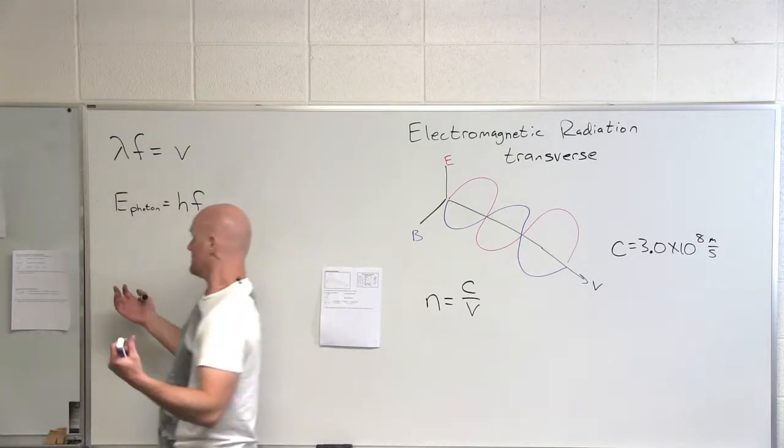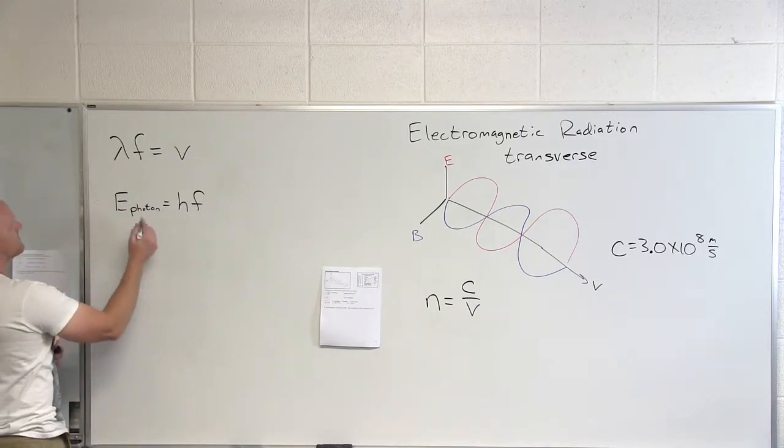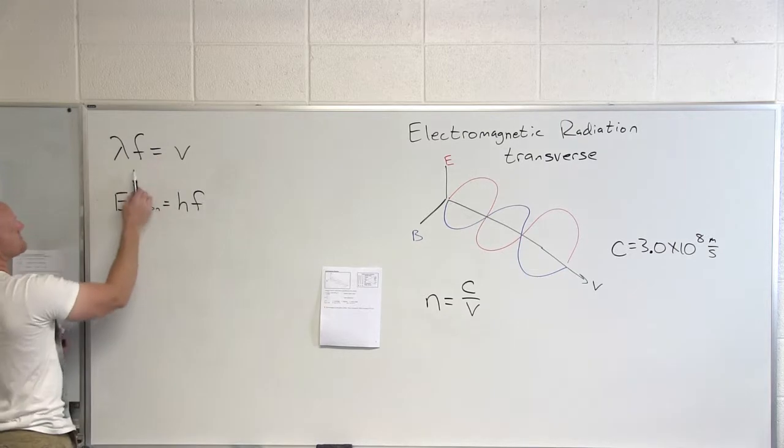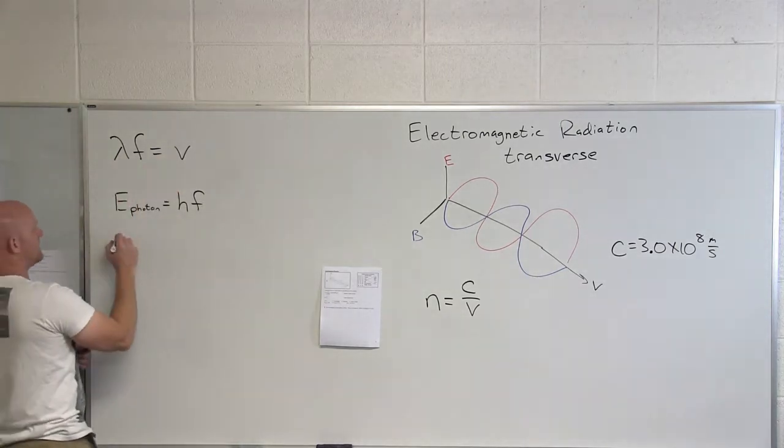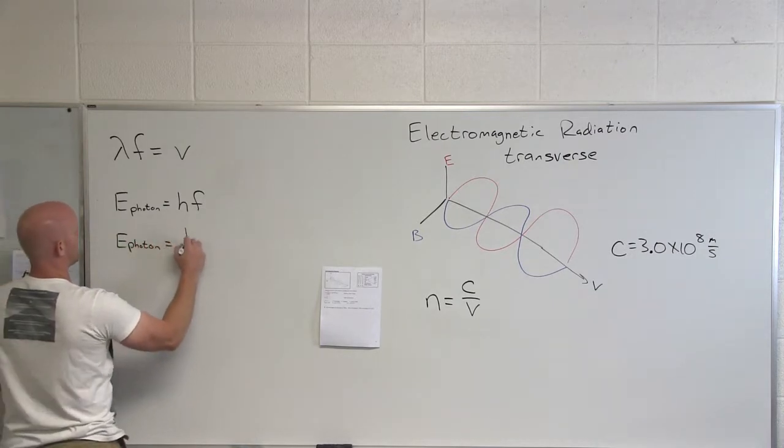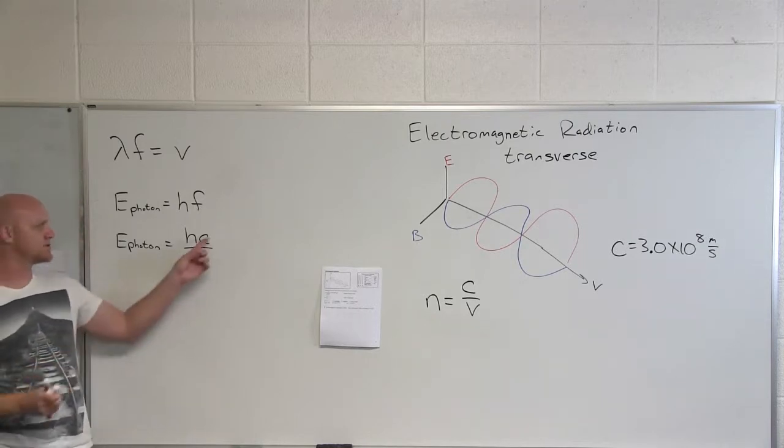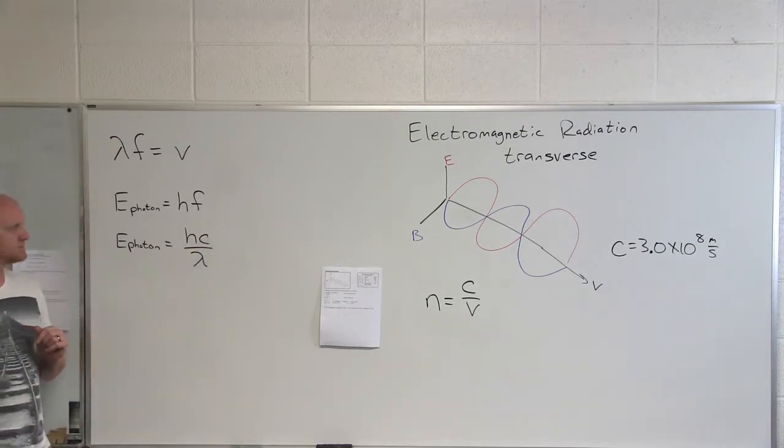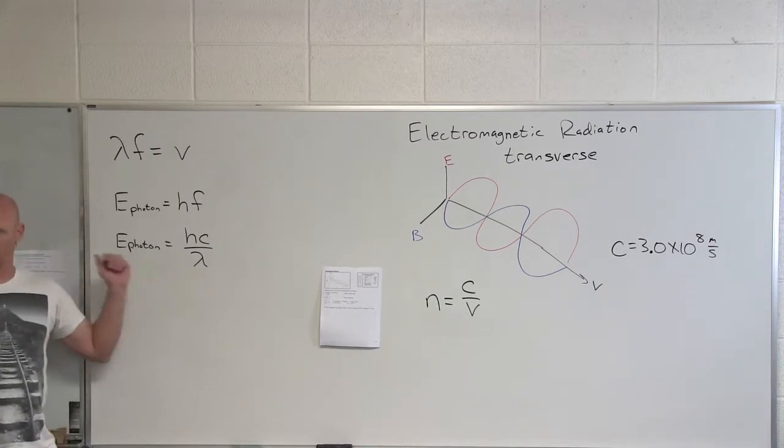You can look at properties and characteristics in terms of light both ways. If you rearrange this, the frequency equals the speed of light over the wavelength, f = C/λ. The energy of a photon in terms of wavelength is E = hC/λ. The C here assumes we're in a vacuum, and the energy of a photon is inversely proportional to the wavelength.